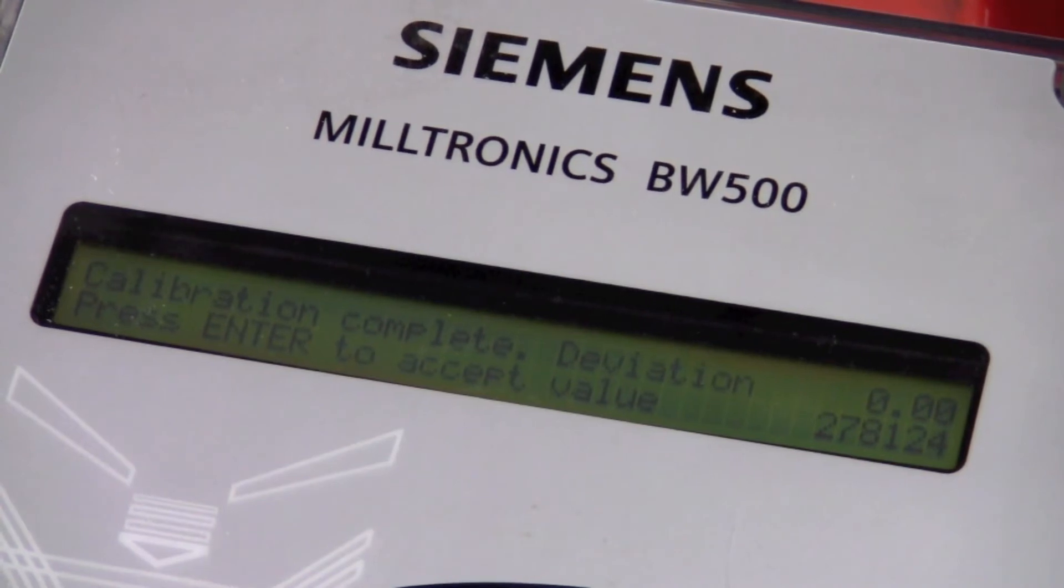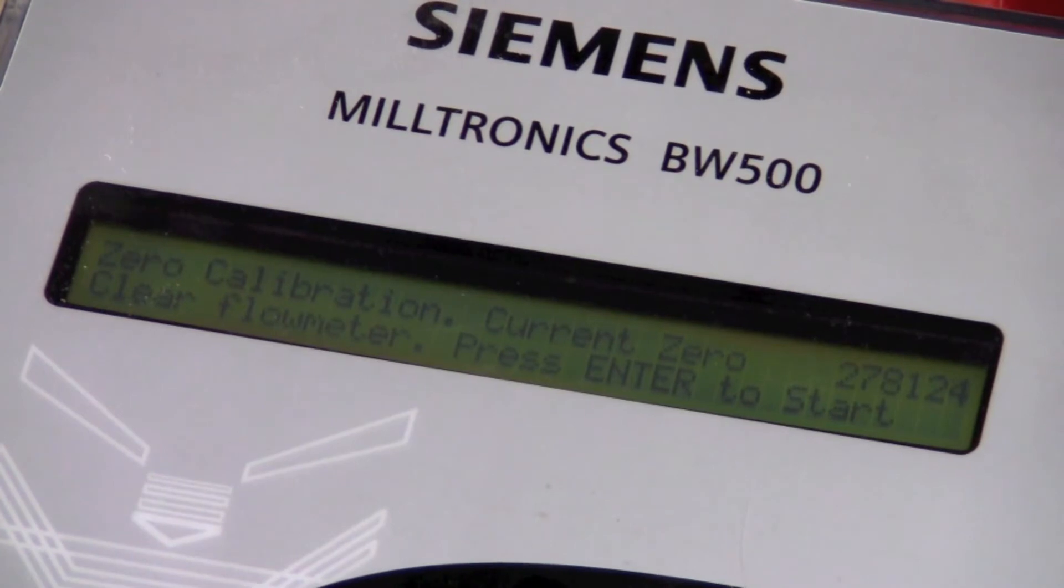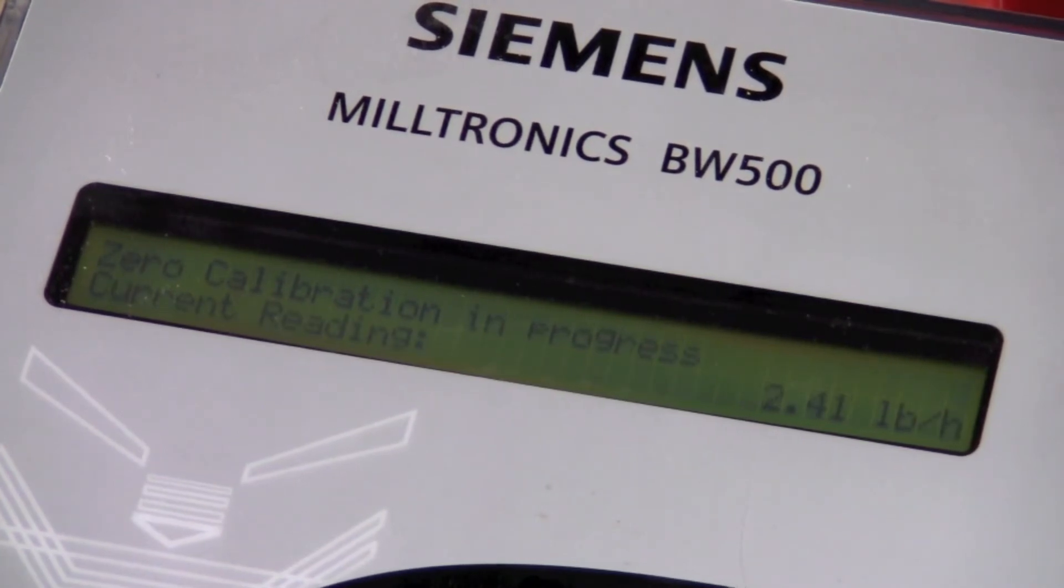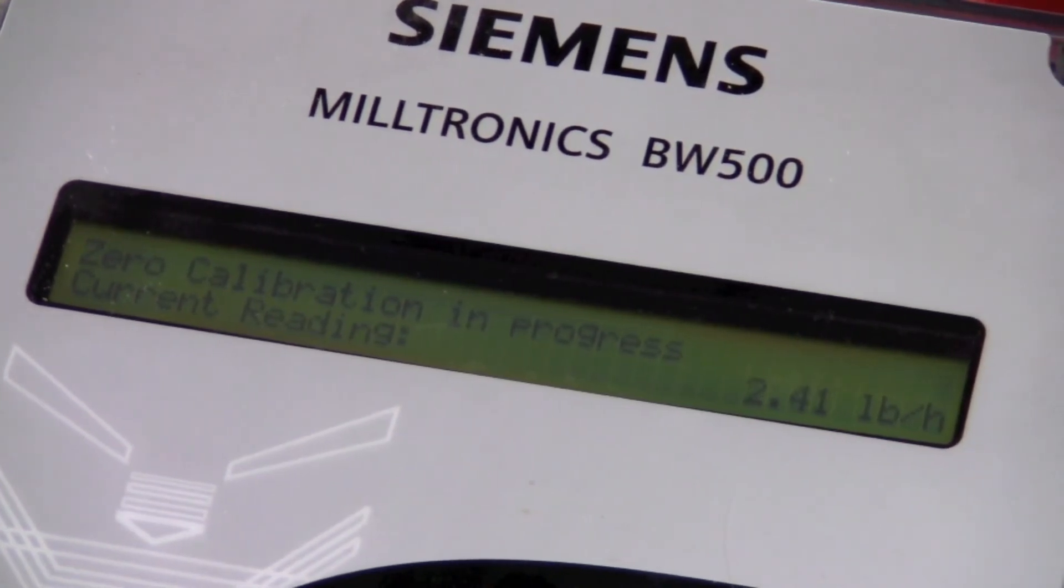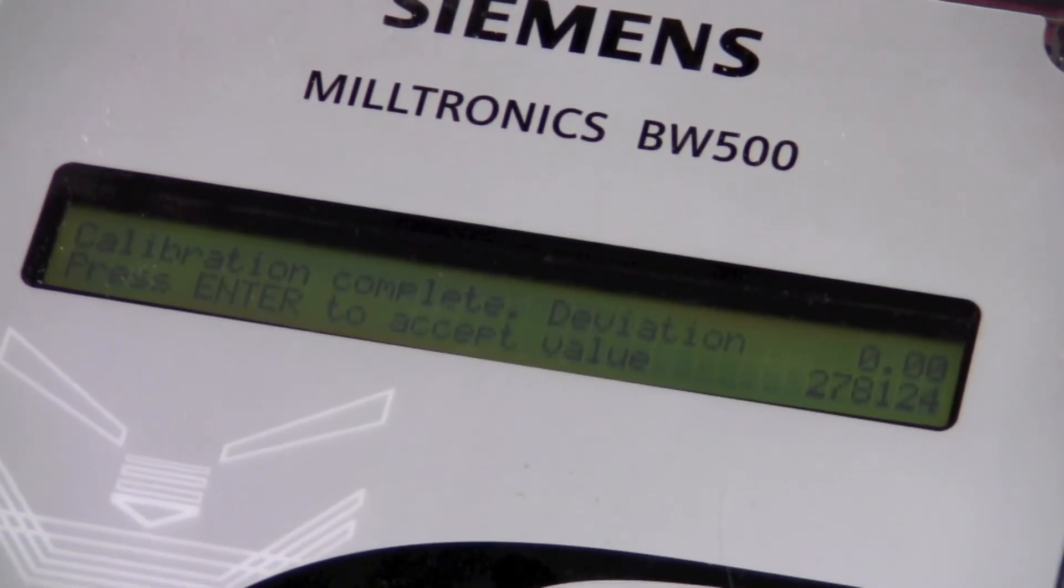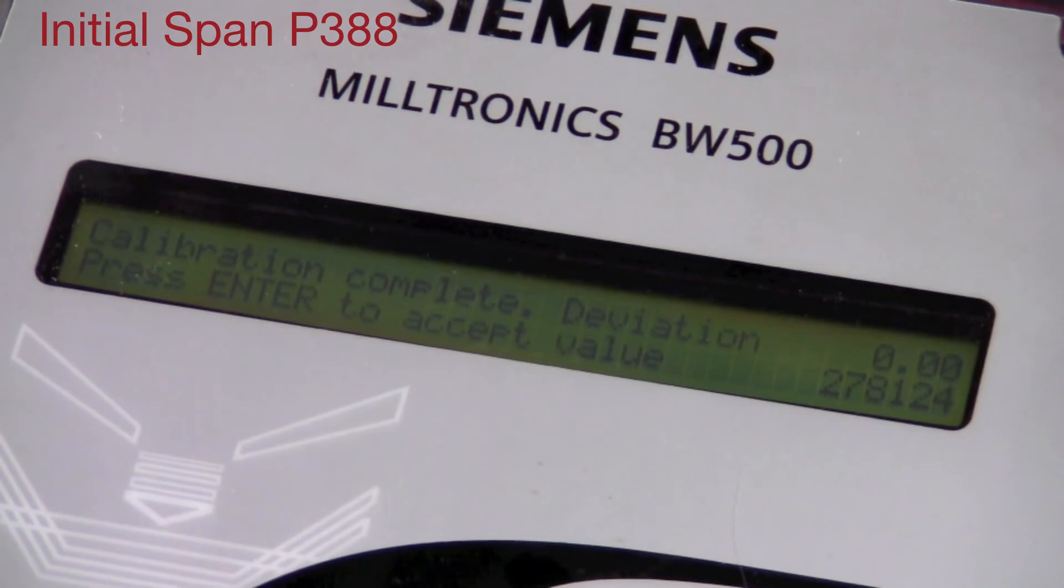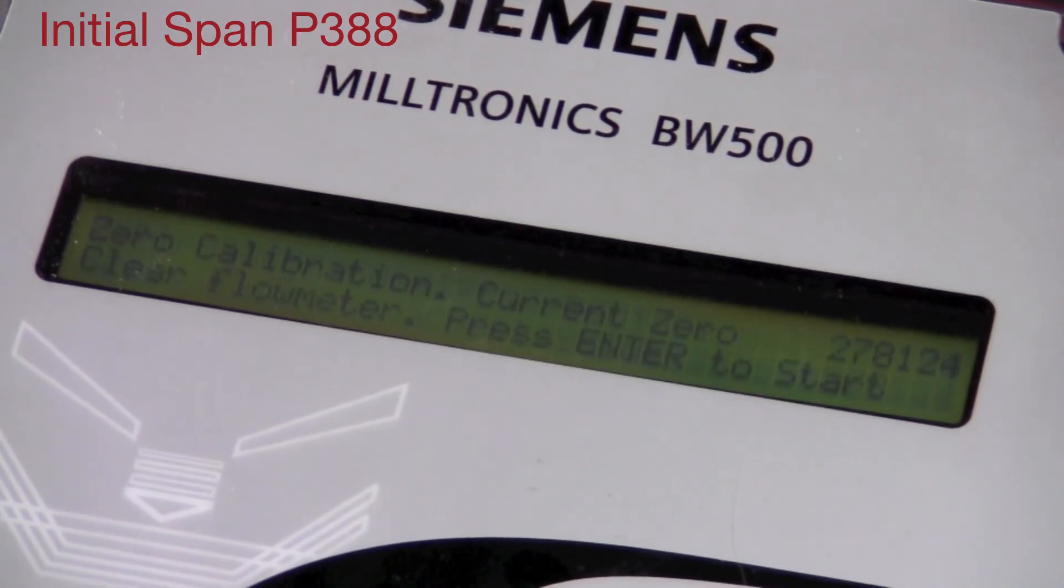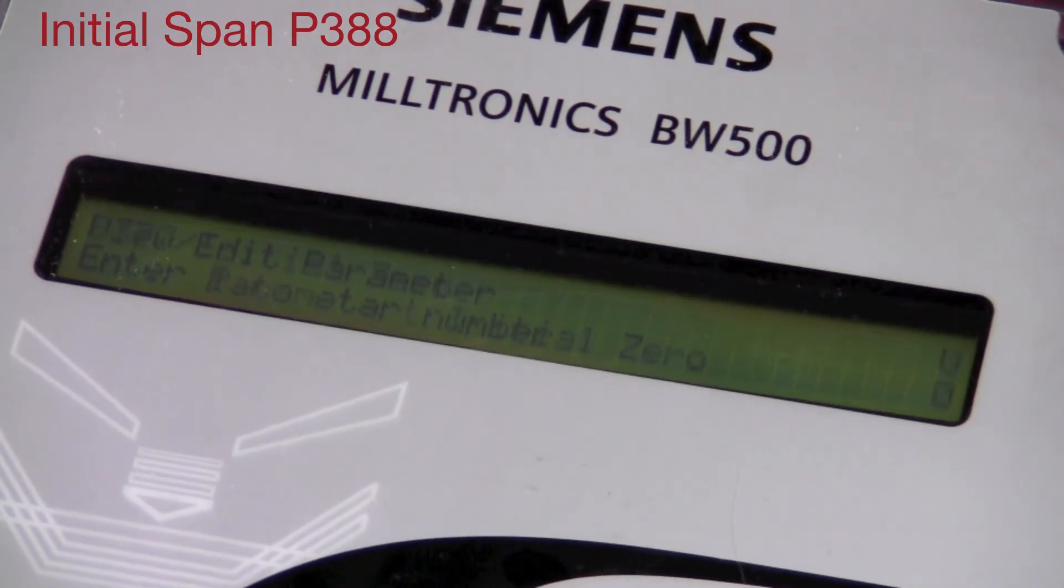We'll accept this value and do a second zero to see if there's any deviation. The deviation is minimal, actually zero, so we're ready to do an initial span, which is parameter 388.